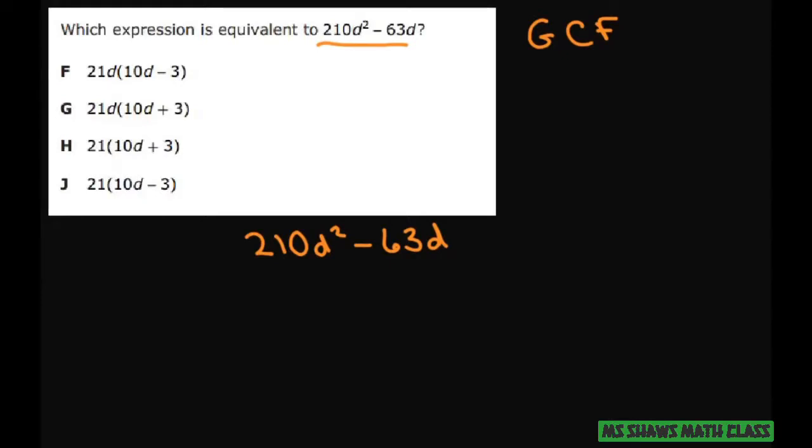So given that I have a 21 here, I'm going to divide both of these terms by 21. Also, since I have d's here, I can also factor out a d. So what we're going to do is factor out 21d.